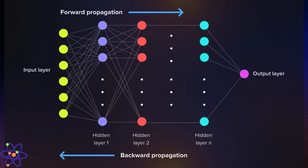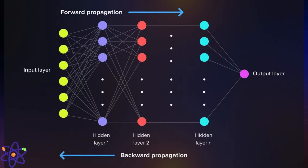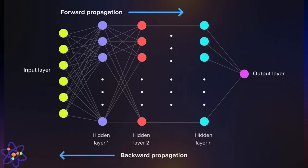Backpropagation is a supervised learning algorithm used for training neural networks. It involves iteratively adjusting the model's weights based on the computed gradient of the loss function with respect to the model's parameters. Backpropagation enables the optimization of neural networks by updating weights in a way that reduces the difference between predicted and actual output, ultimately improving the model's performance.